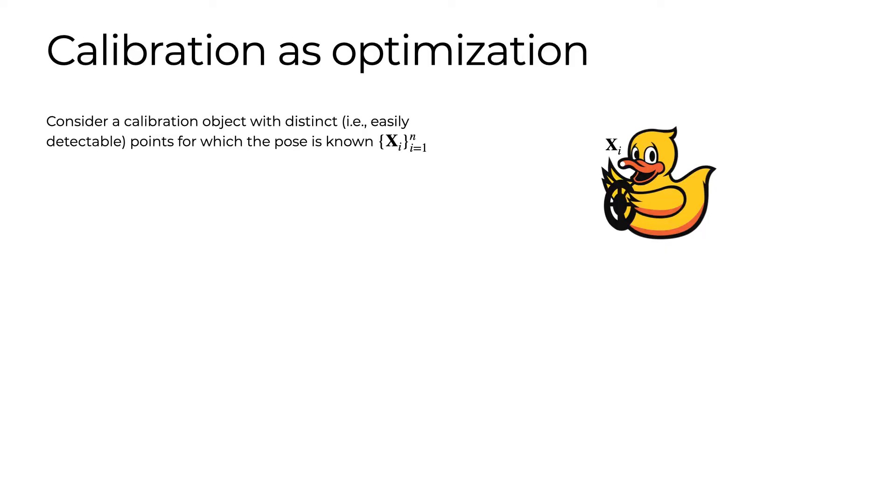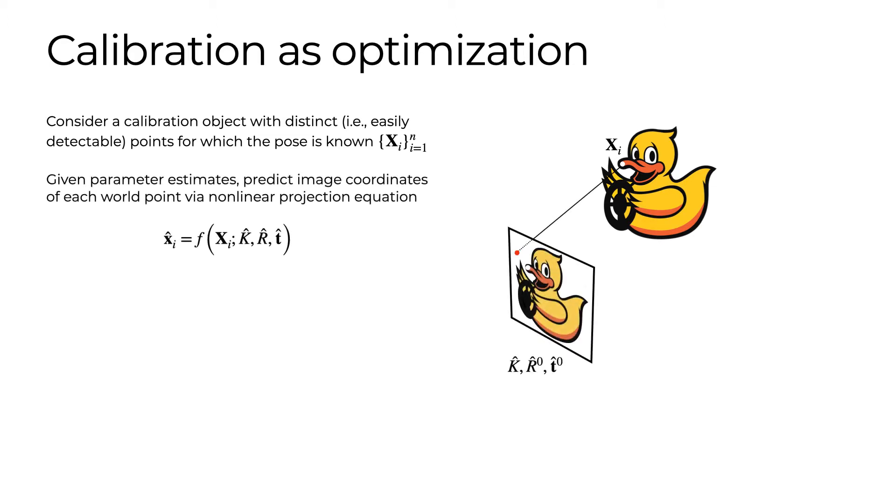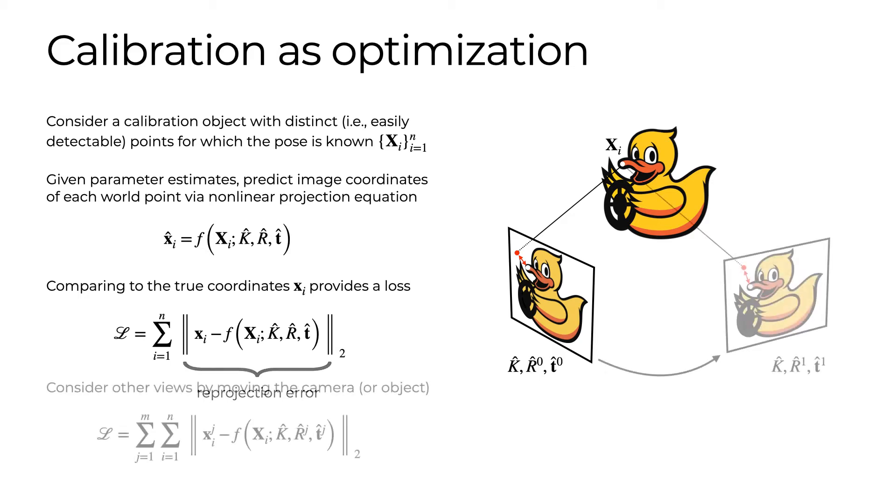An alternative approach is to formulate calibration as an optimization problem that directly estimates the intrinsic and extrinsic parameters in a way that allows us to incorporate initial parameter estimates. Consider a calibration target that provides a set of 3D points of known pose that are easy to detect in images. Given estimates of the camera calibration matrix and the camera pose, we can predict where a point on the target will project onto the image using a nonlinear function F that describes the projective operation. The distance between the predicted point and the detected point provides a measure of error. This distance is referred to as the reprojection error. Summing these errors over the different point pairs provides a loss function that we can optimize. Typically, we capture additional views by moving the camera and/or the target around and include the corresponding reprojection errors in the loss function.